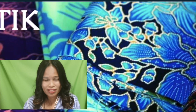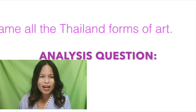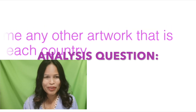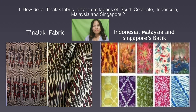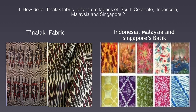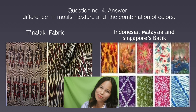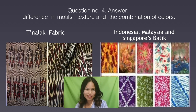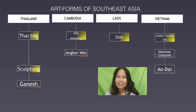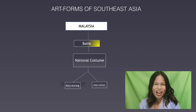We've been discussing a lot of art forms from different countries. Now you are going to answer questions. Question one: what types of artworks only belong to a specific country? Number two: name all of Thailand's forms of art. Number three: please name any other artwork that is unique in each category. Number four: how do these differ from each other? The answer to number four is: differences in motifs, texture, and the combination of colors — from Tinalak to Indonesia, Malaysia, and Singapore batik. Let's take a look at the summary of Southeast Asian art and match your answers for questions one to three.